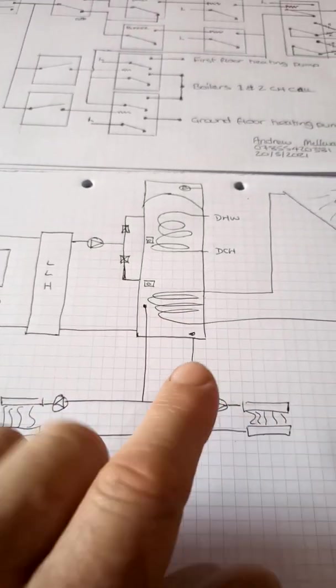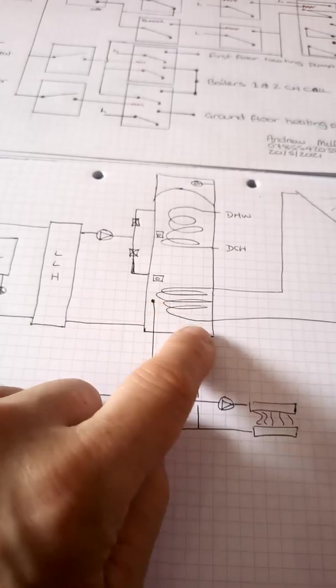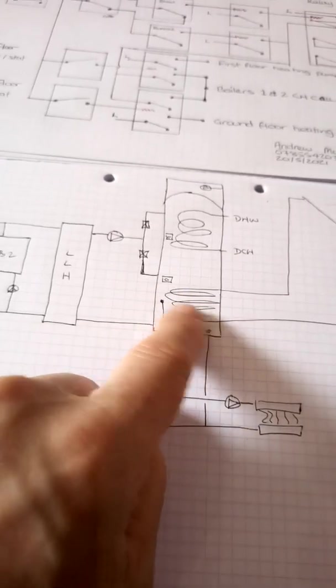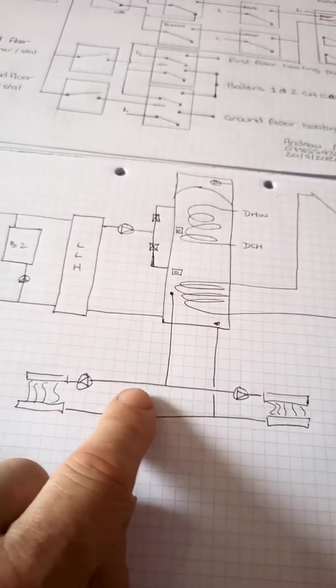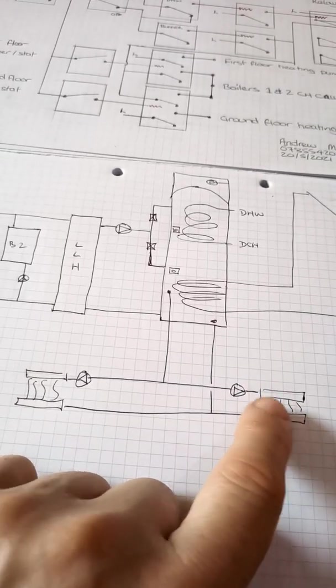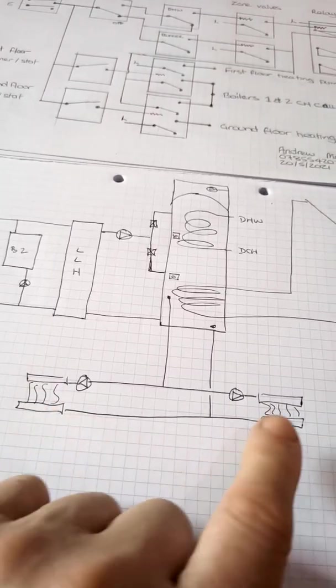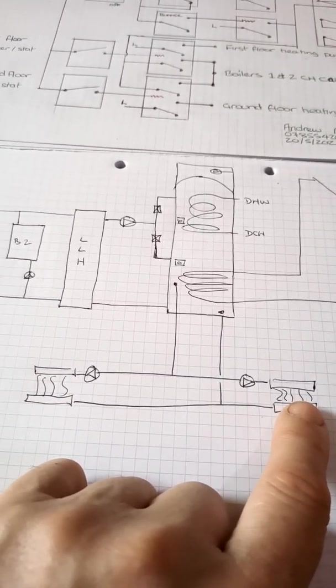So these will draw off the bottom of the cylinder here. So this is a low temperature end of the cylinder. They'll draw off a low temperature flow to go to the underfloor heating systems and come back on the return. There is no blending valves on these and there's no room stats on these. On this system they're just directly connected.